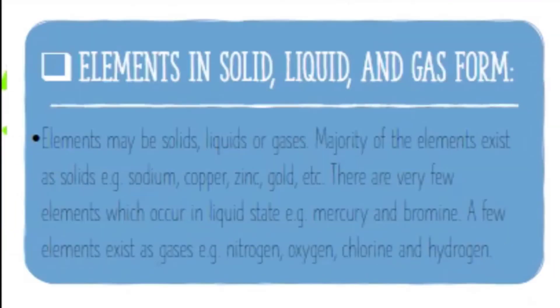Next is elements in solid, liquid, and gas form. Elements can exist in solid form, liquid form, and gas form because elements are basically matter. Matter exists in solid form, liquid form, and gas form. Solid form elements exist like sodium (symbol Na), copper (symbol Cu), zinc (symbol Zn), and gold (symbol Au).